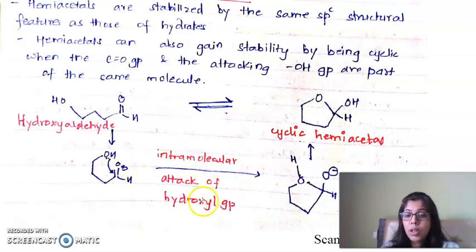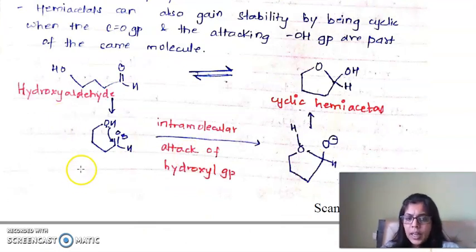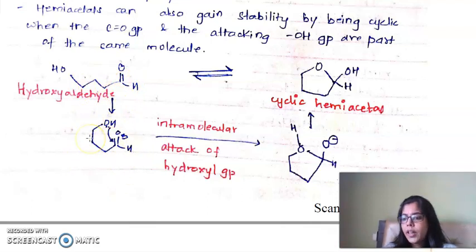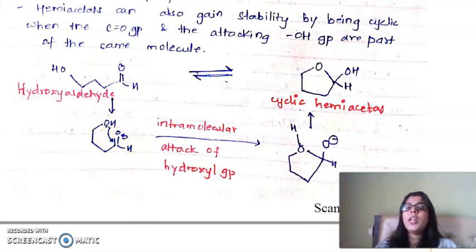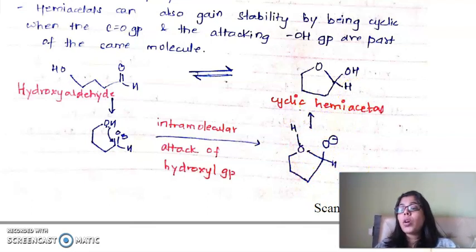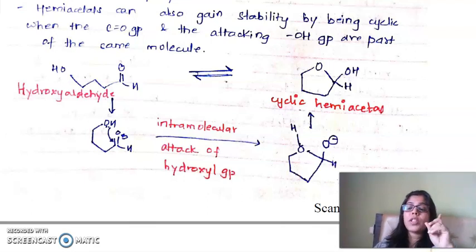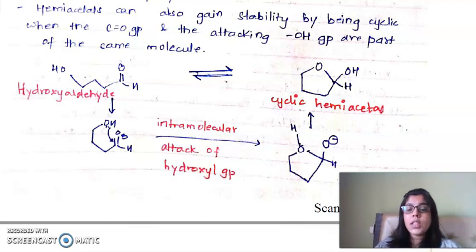Writing the straight-chain structure in a particular fashion makes it easier to understand how the oxygen attacks the carbon. The carbonyl oxygen pulls electrons, a new bond forms between the hydroxyl oxygen and the carbonyl carbon, giving a cyclic oxyanion intermediate which then gains H⁺ from the solvent to give the cyclic hemiacetal. The same reaction can happen between two molecules or within one molecule if C=O and OH coexist.